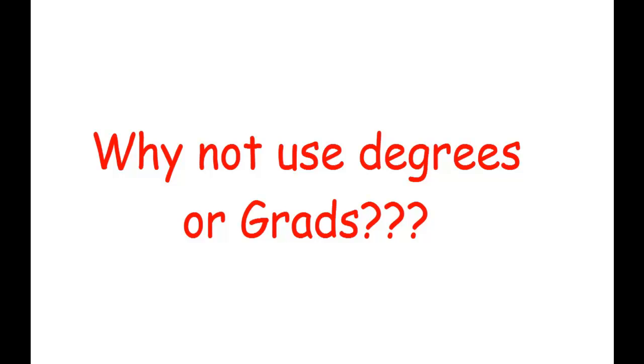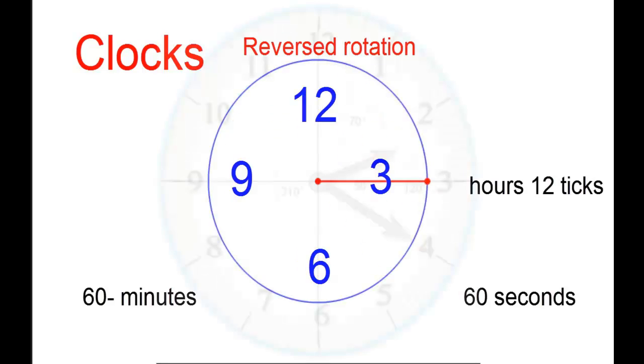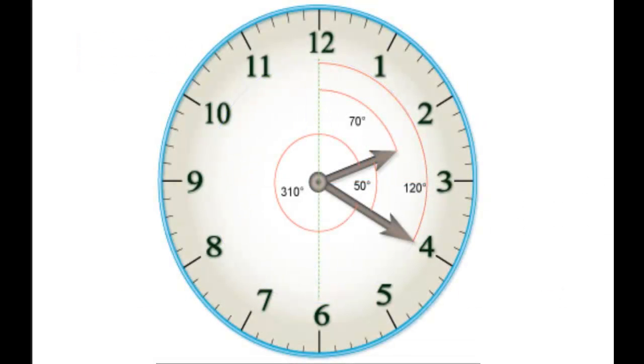Why complicate matters? I could see not wanting to use the clock system since it has a reverse rotational direction and two tick systems within it: a 12 tick system for hours and a 60 tick system for minutes and seconds.